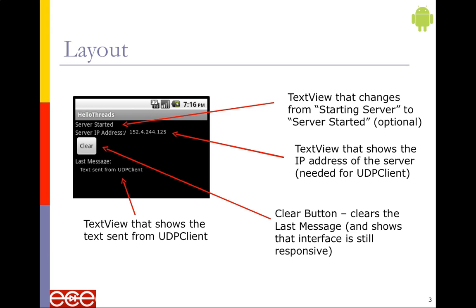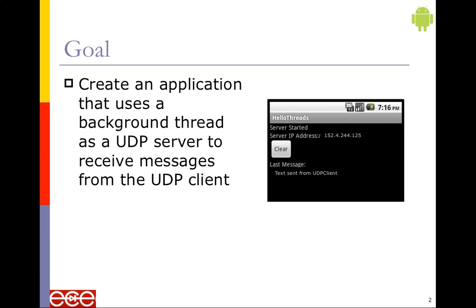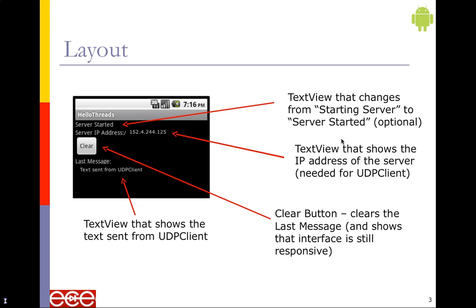There's a Hello Threads example, and we can create an application that uses a background thread such as a UDP server to receive messages from a UDP client. This is practically the same example given earlier but code designed for Android. The program essentially is a client-server where the server loads up, sits there and waits, and then another phone as a client connects to it through a UDP connection. The application shows the last message sent from a UDP client, the server started status, and the server IP address. We have a text view that changes from 'starting server' to 'server started.'